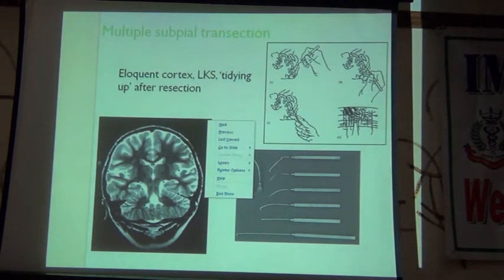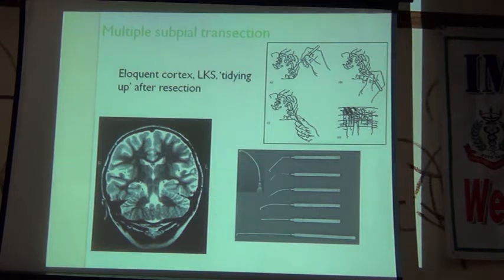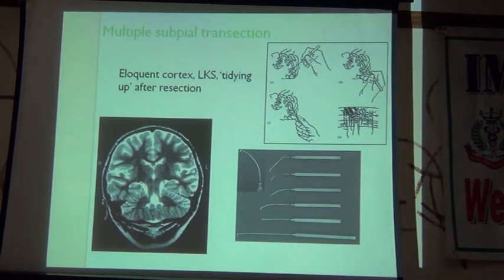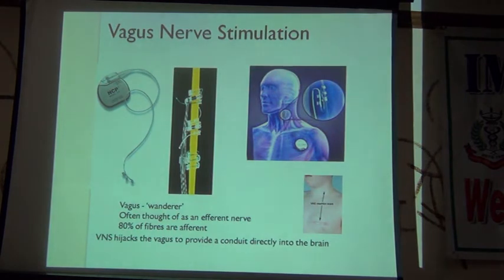If the lesion is very close to the speech area — for example in a condition called Landau-Kleffner syndrome — you can do an operation called multiple subpial transection. This means that when you are not able to resect the pathological area, you separate the fibers so that lateral spread of the epileptic activity does not occur. This minimizes the incidence of seizures. If no resective option is available or the patient does not want resection, we can consider vagus nerve stimulator insertion.